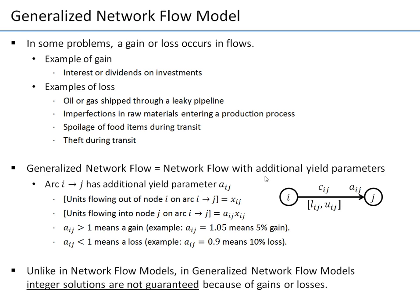About the generalized network flow model — what we introduce here is that we might have gains or losses on some or all of the arcs. In certain applications, we experience gains or losses when we have a flow of units on arcs in a network. An example of a gain is interest or dividends on an investment. When you put in $100 at 5% interest per year, a year from now you have 5% more — the starting flow is $100 and the ending flow is $105.